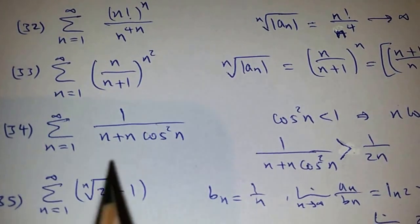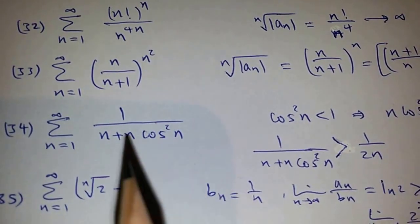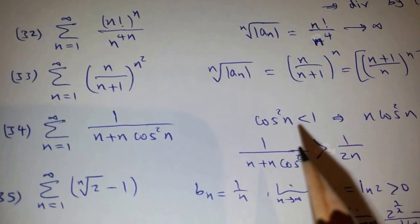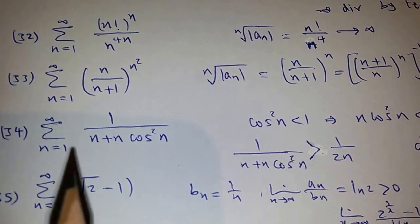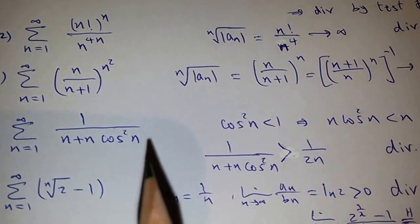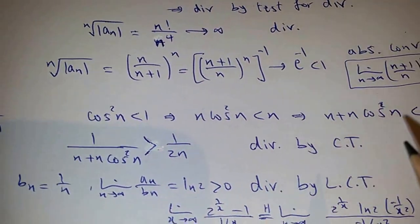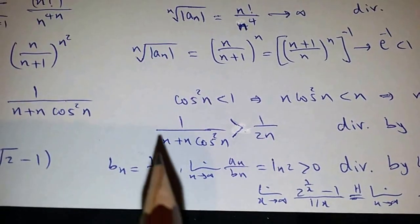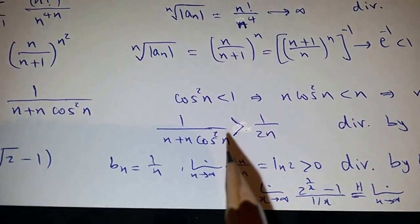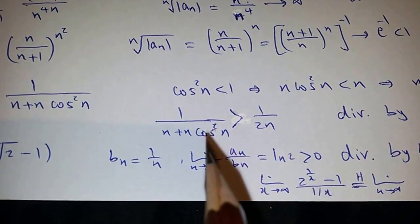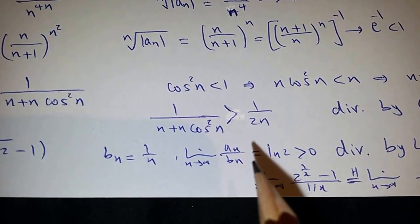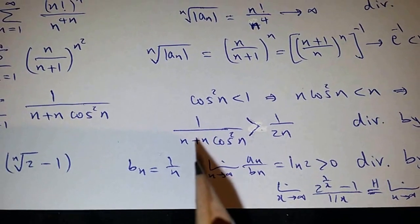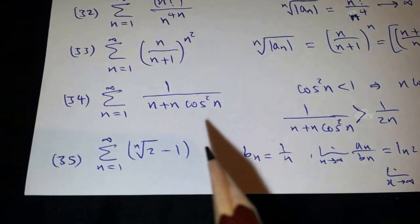For this example, if you start by the fact that cos²(n) ≤ 1, then n + n·cos²(n) ≤ 2n. So the sequence of terms is greater than 1/(2n), and this is divergent. So this is divergent by the comparison test.